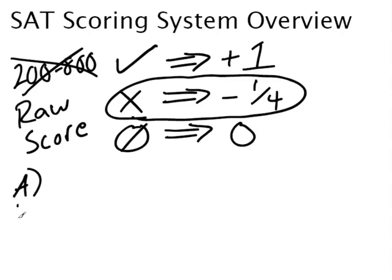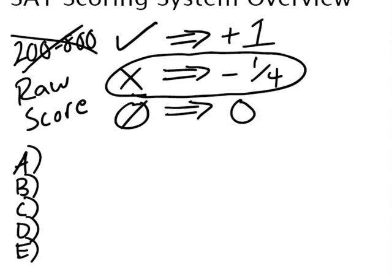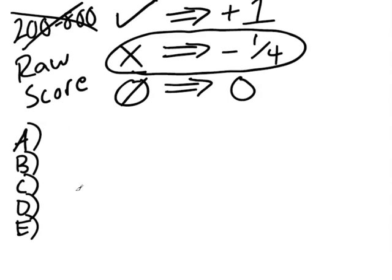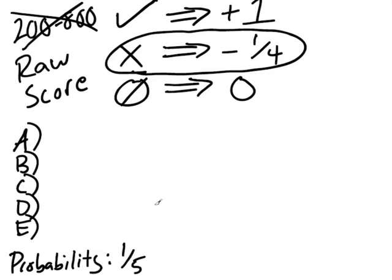In order to do that, we need to talk about probability for a second. I'm writing A, B, C, D, E to represent the typical SAT question with five options. For those of you who have studied probability, if you guessed completely randomly on any particular question, you have a probability of one-fifth of getting that question right. That's important because we want to consider a certain scenario and show how the scoring system affects the way your score is calculated.